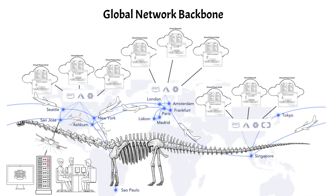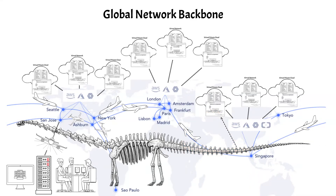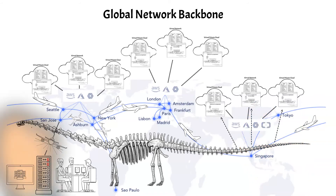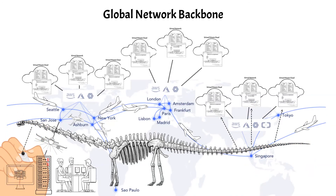By using F5's private global network backbone, we can deliver reliable and secure connectivity across single clouds, multi-clouds, and on-prem data centers, while providing increased speed to get users to their applications quicker.